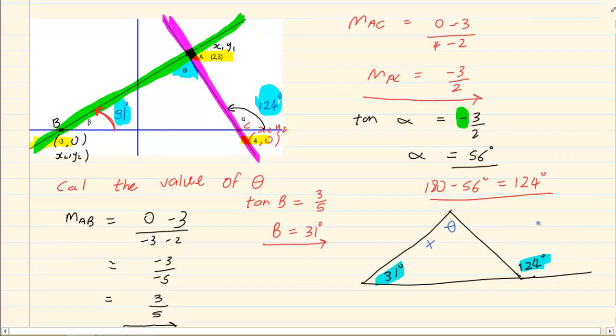Which means 31 plus theta would equal to 124. 31 plus theta is equal to 124 degrees. This is your normal algebra rule. So what they've done is they've taken trig to calculate alpha and beta. Now they're simply going to your normal standard geometry which is actually grade 8 and grade 9 work. So we simply say theta is equal to 124 minus 31, which would make theta equal to 93 degrees.